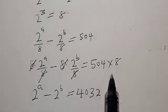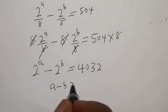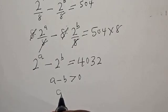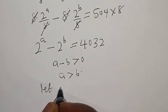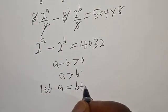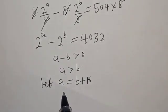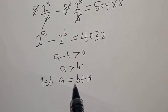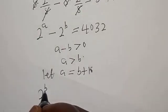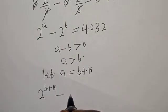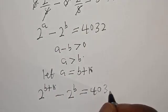Remember that a minus b is greater than 0. Therefore a is greater than b, and we say let a equal to b plus k. Since a and b are positive integers, anywhere you see a, you put b plus k there. Then we have 2 raised to power b plus k, minus 2 raised to power b, equal to 4032.